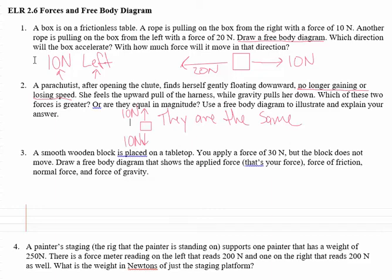For number three, a smooth wooden block is placed on a tabletop, you apply a force of 30 newtons but the block doesn't move. Draw a free body diagram. Not moving is also maintaining a constant velocity except now the velocity is zero. Just like with the parachutist who is falling at a constant rate, now we have a block sitting on a table not moving, so its velocity is zero and it's not changing.